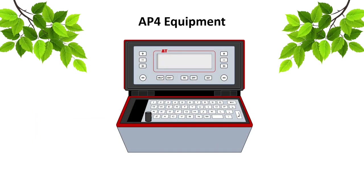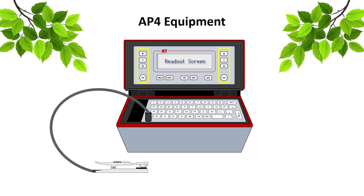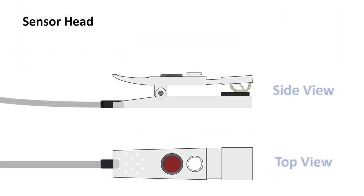The AP4 porometer consists of two main parts. The body, with readout screen, mirrored command buttons for left and right-handed users, and a keyboard which enables notes to be added to readings. And the sensor head, which connects to the body via a cable and gently clips onto the leaf to measure stomatal conductance. On the upper surface of the sensor head lies the main control button and a small light sensor used to assess light conditions at the time of measurement.